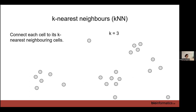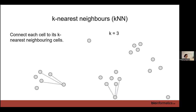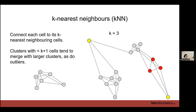To turn our single cell RNA-seq data into a graph, we use k-nearest neighbor networks. We take each cell and connect it to its k nearest neighbors. If k is three, each dot (cell) gets connected to its three nearest neighbors, and we keep doing that for all cells. This creates some problems: outlier cells in yellow will still be connected to three cells by definition, and a small cluster of only three cells will have one neighbor outside the cluster, getting stuck to a second cluster.